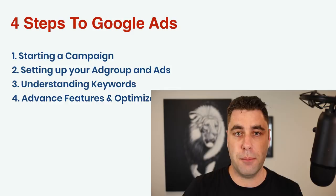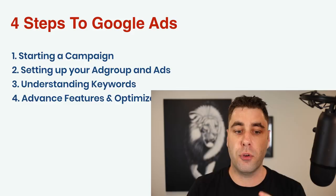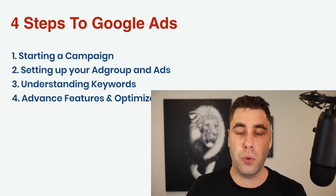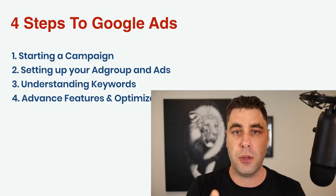These four steps are simple. Number one, I'm going to take you through how to start your own campaign, get everything set up step by step, and show you some tips and tricks so you can run profitable ads. Number two, we're going to go through setting up an ad group and creating your ad so it shows up in Google. Number three, I'm going to take you through how to understand keywords so you can optimize your ads and make more money. Number four, I'm going to be taking you through some advanced features and optimization so you can make your ad extremely cheap, because the cheaper your ads are, the more money you make.